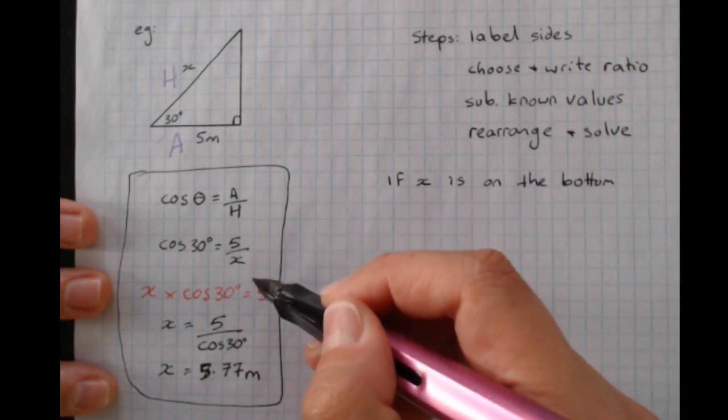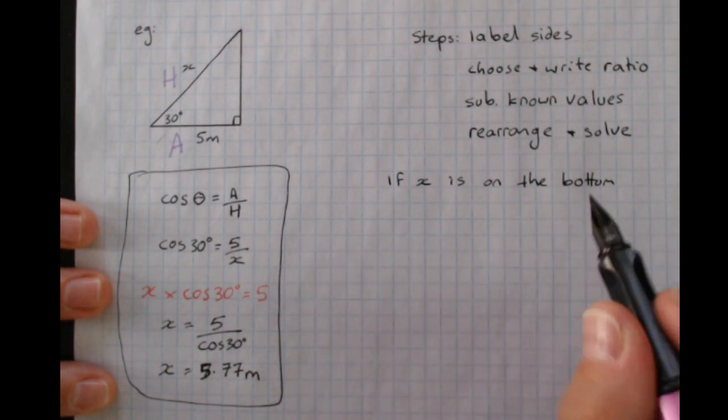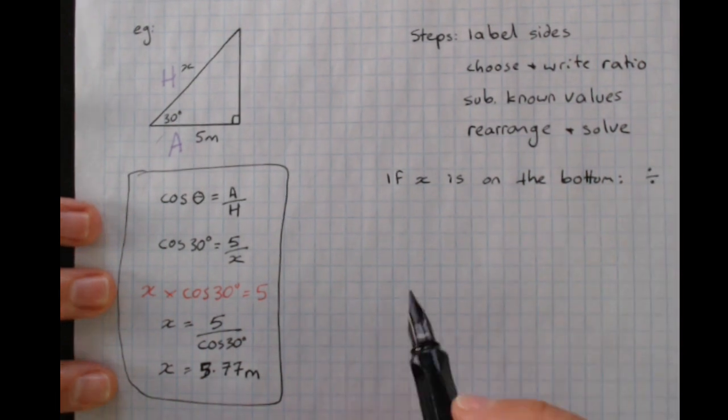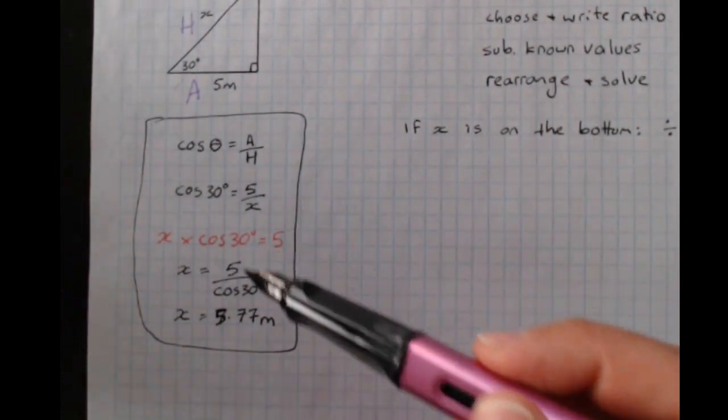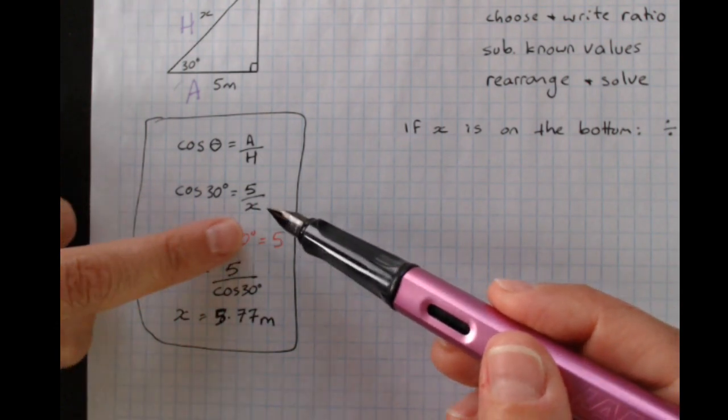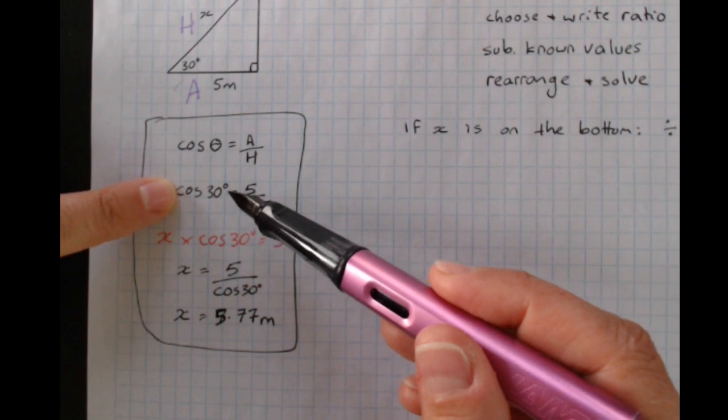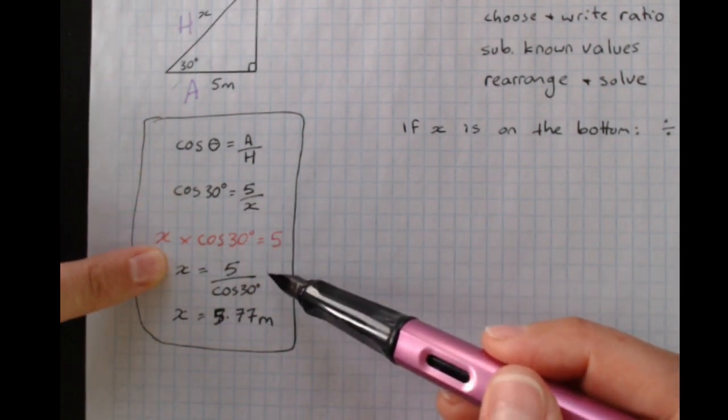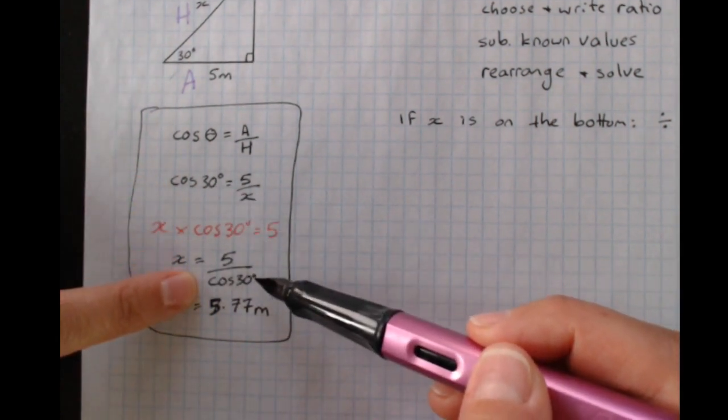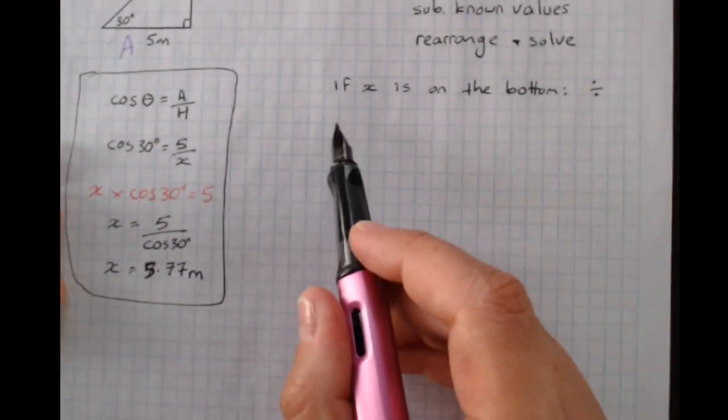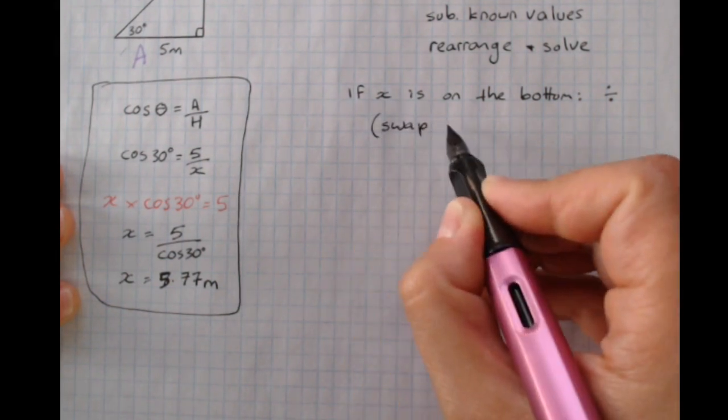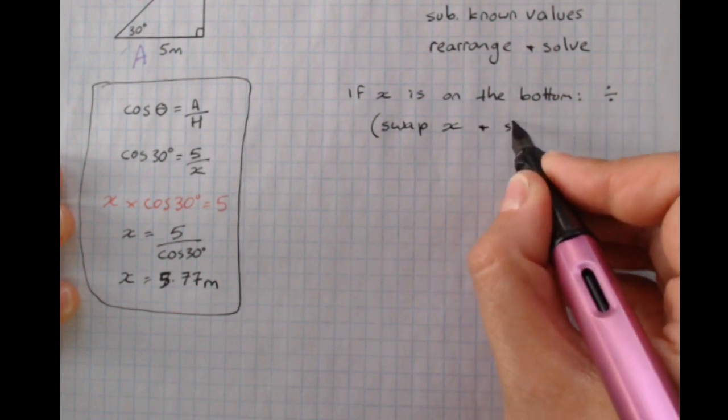That means it's the denominator of the fraction. You're going to have to divide. And one way of looking at it, which can help you remember how to get your correct working, it's not as mathematically good. See where the x started and where the cos 30 started, and then see where they ended up. The x was on the bottom of the fraction, now it's over here. The cos 30 was here, now it's on the bottom of the fraction. They swapped. So if x is on the bottom, one thing you might like to do is remember to swap x and the sine cos tan.